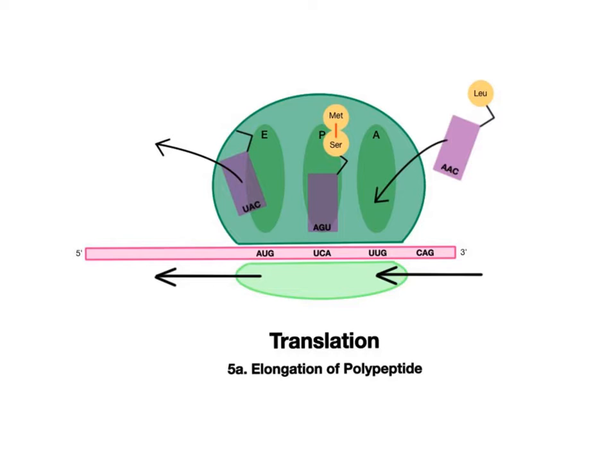In step five A, as the ribosomal complex slides from right to left, so does the messenger RNA, as it moves to the next codon in the sequence, UUG. This codon calls for the transfer RNA bearing the anticodon AAC and carrying the amino acid leucine, symbolized LEU, which docks at the A site.